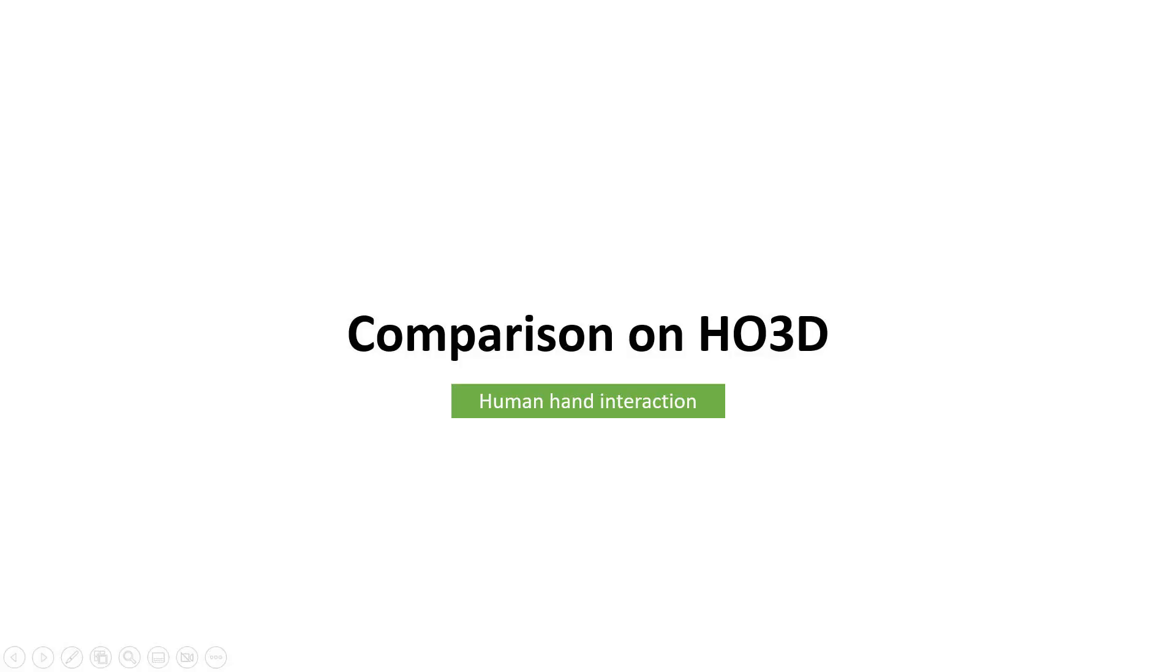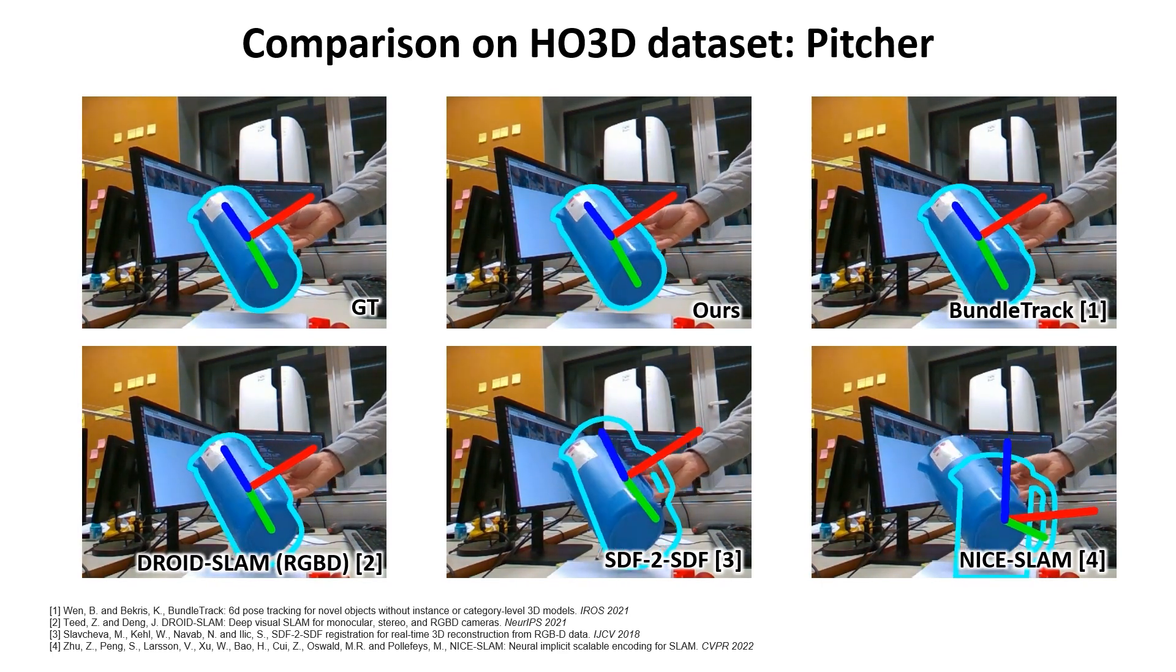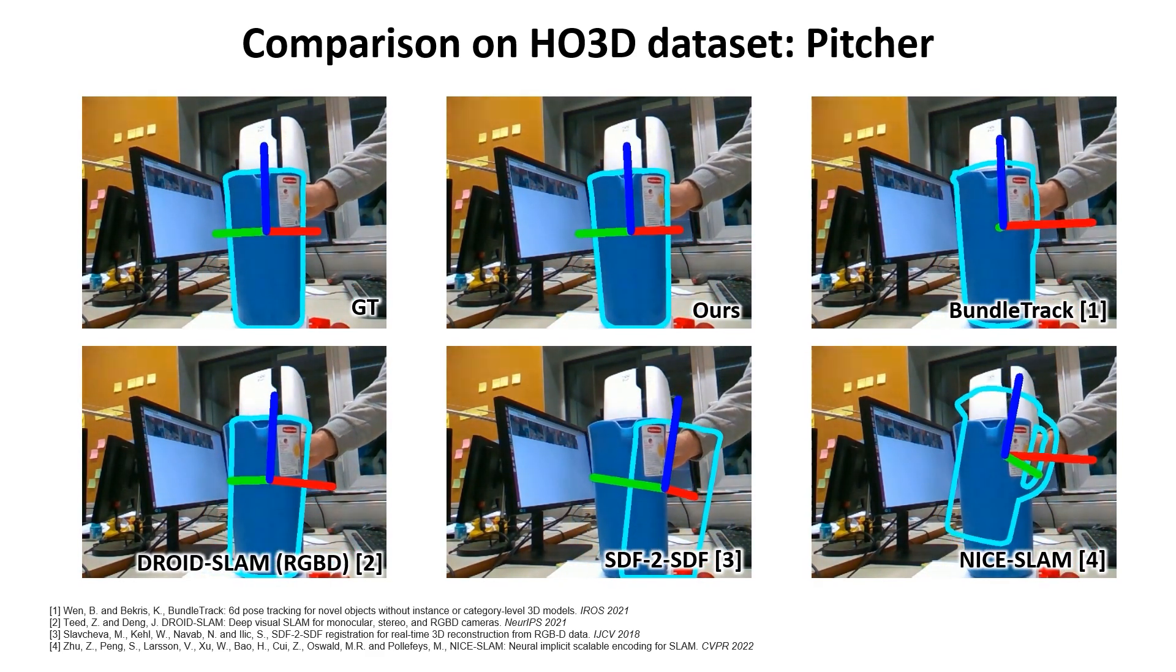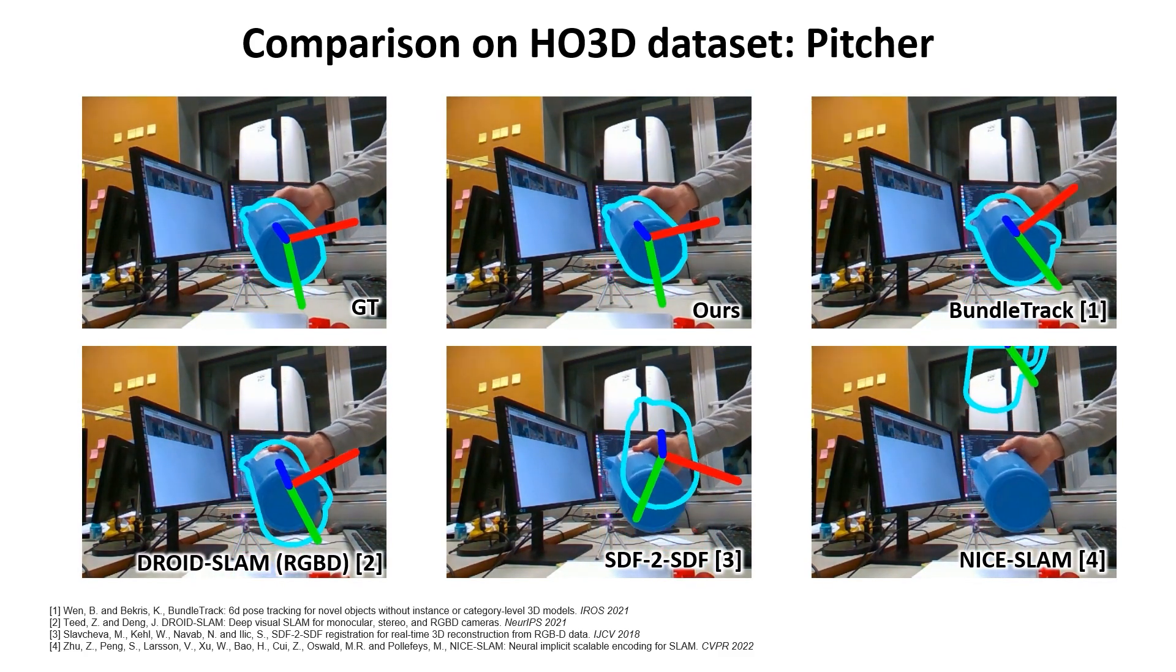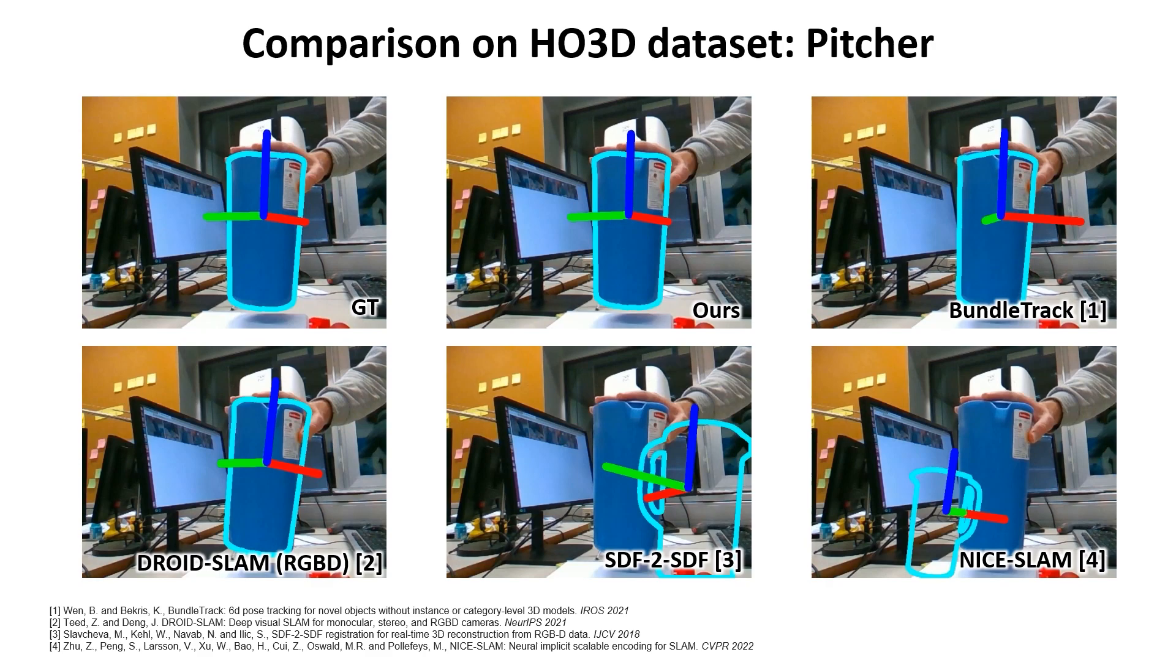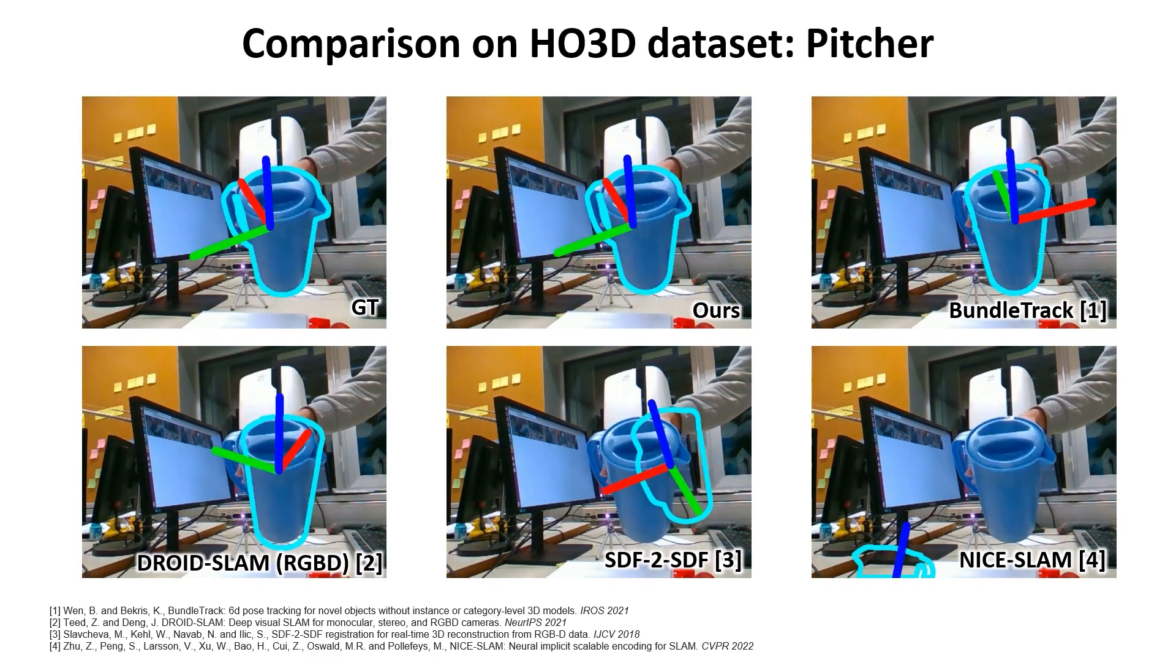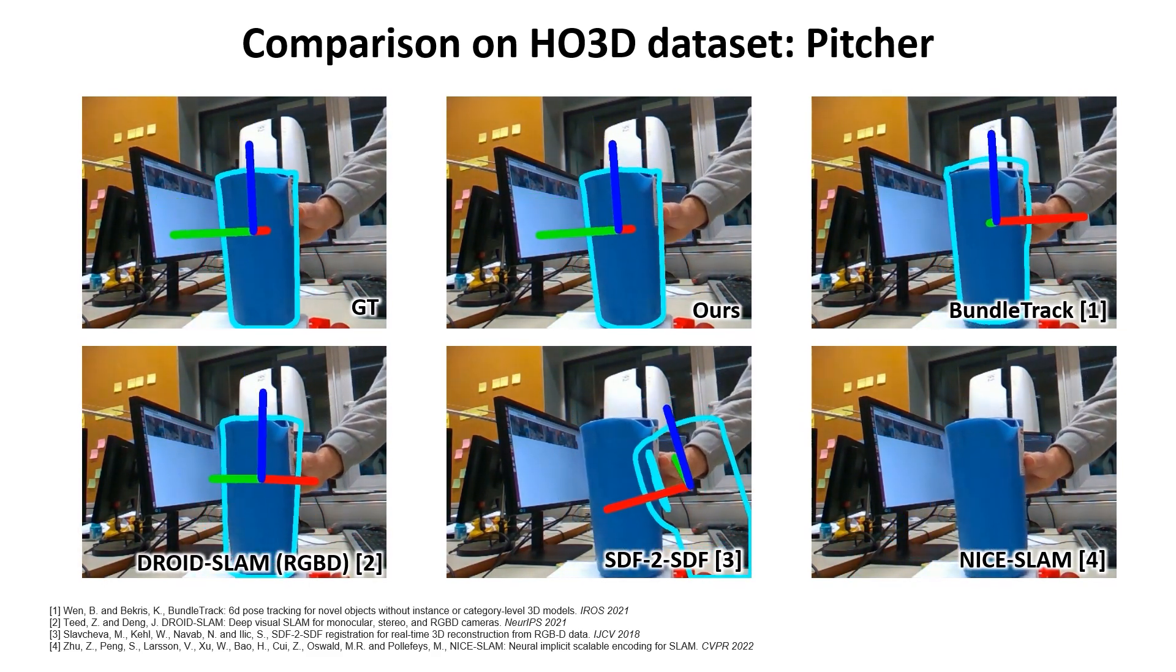Next, we evaluated on HO3D dataset, which includes human hand and object interactions. Here, the blue pitcher is lacking texture. Around the edges, such as the pitcher mouth and handle, the depth is usually missing for geometric features. When the handle is not visible, the cylindrical shape causes symmetric ambiguity. Competitive methods BundleTrack and Joint SLAM are not able to track the handle correctly. In contrast, our method reliably tracks until the end of the video without any re-initialization.